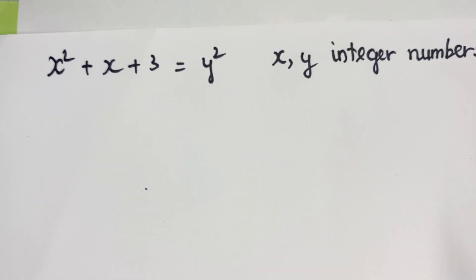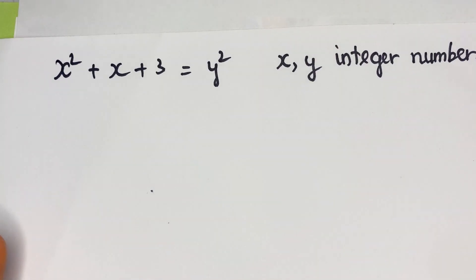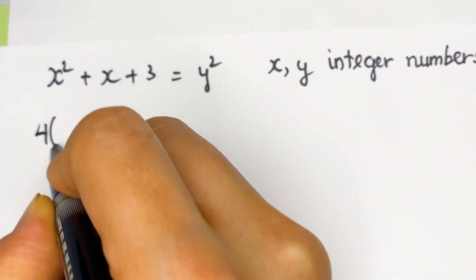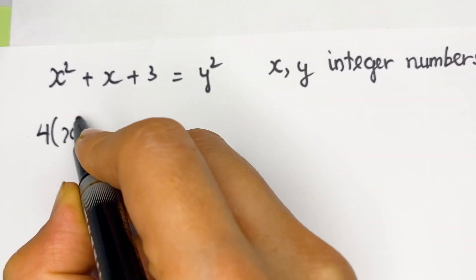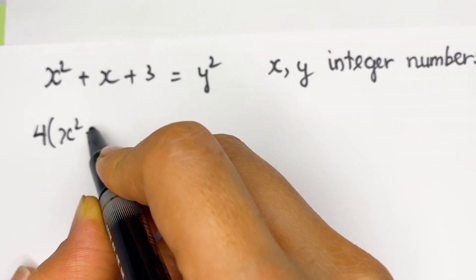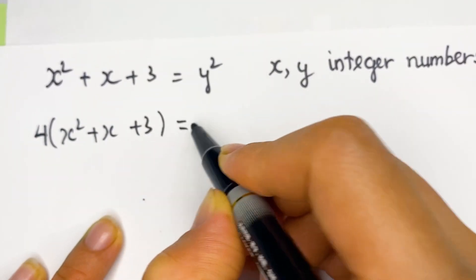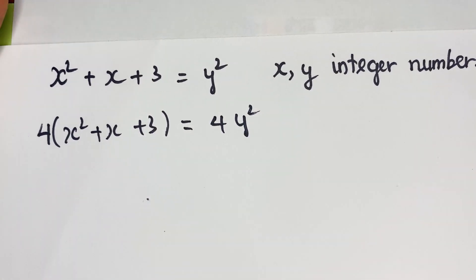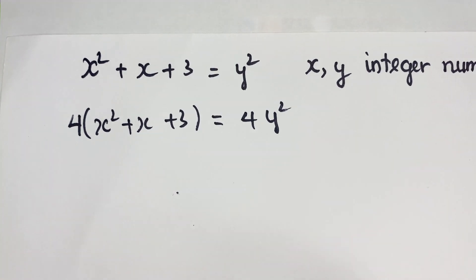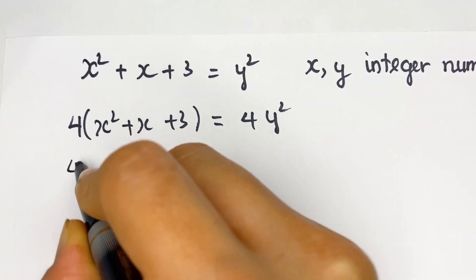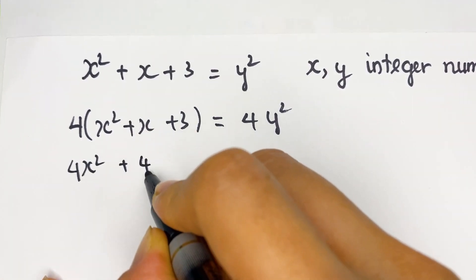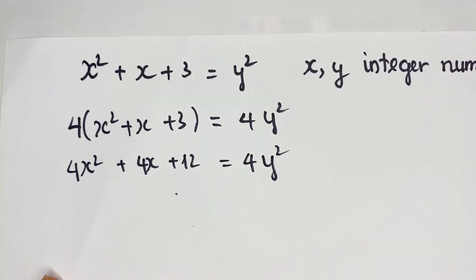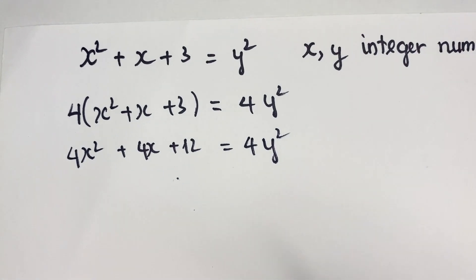Firstly, you need to multiply both sides by 4. Therefore, we have 4x squared plus 4x plus 12 equals 4y squared.